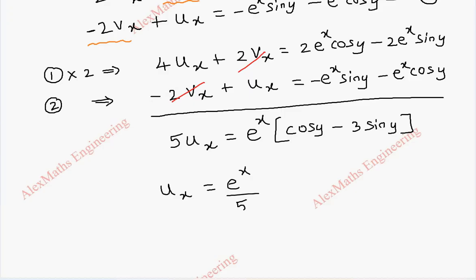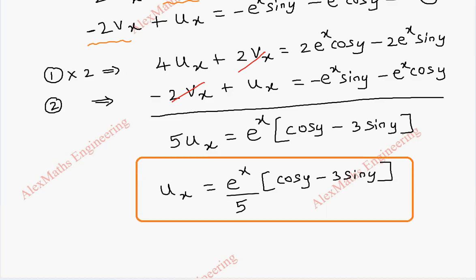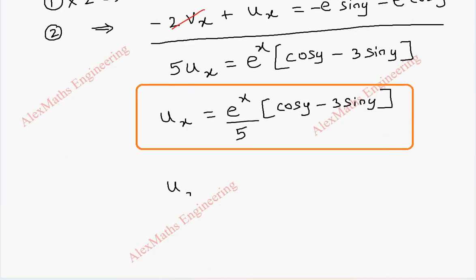We got ux, but we need ux of z comma 0. By replacing x with z and y with 0, we get e to the power z by 5. Since cos 0 is 1, we have ux of z comma 0 equals e to the power z by 5.